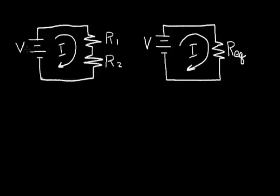I have a battery with a voltage V that applies a voltage across R1 and R2. On the right, I have an equivalent circuit. It has the same voltage V and the same current flowing in the circuit I. And I want to calculate the equivalent resistor to R1 and R2.